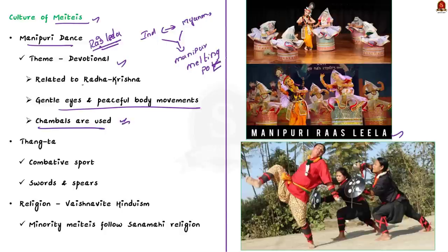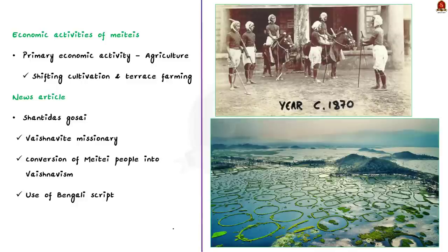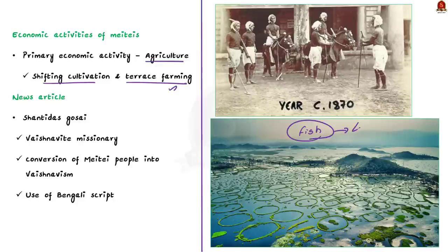Coming to the martial art form of the Meitei: Thang-Ta is a combative sport which had its origin from the Meitei knights of the monarchical rule. It involves various fighting techniques with swords and spears. Coming to religion, Meitei people majorly follow Vaishnavite Hinduism. Some Meitei traditionally believe in the local Sanamahism religion, named after the god Sanamahi. The primary economic activity of the Meitei is agriculture. Shifting cultivation and terrace farming are practiced on the slopes of the hills of Manipur, and fishing is also a common practice.